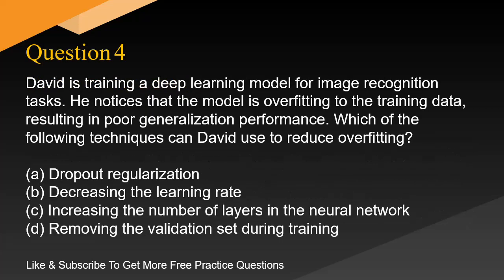Question 4. David is training a deep learning model for image recognition tasks. He notices that the model is overfitting to the training data, resulting in poor generalization performance. Which of the following techniques can David use to reduce overfitting?